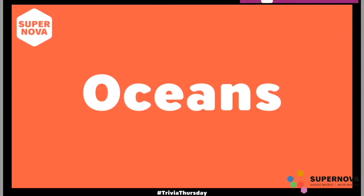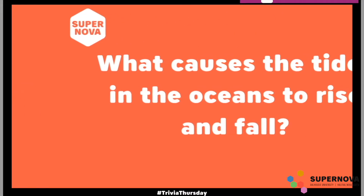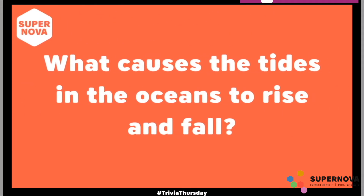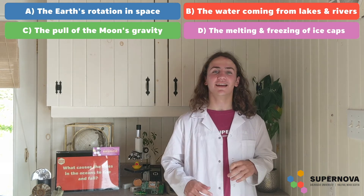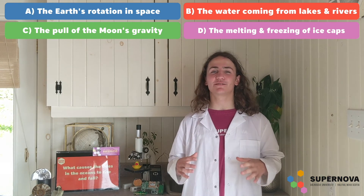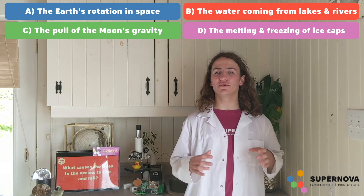To be fair, if light's traveling through water, it becomes a bit more of a slowpoke, only traveling about 250 million meters per second — that's only about 20 million times faster than Usain Bolt. We'll move on to our fourth category now, which is oceans. Our oceans question says: what causes the tides in the ocean to rise and fall? Is it the Earth's rotation in space, the extra water coming in from lakes and rivers, the pull of the moon's gravity, or the melting and freezing of ice caps?